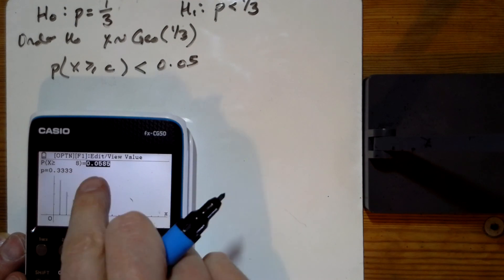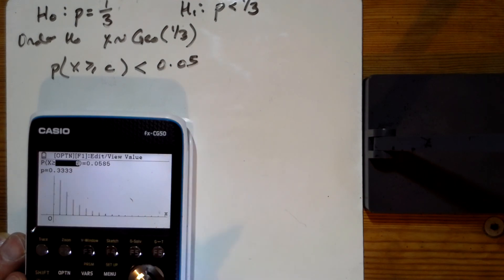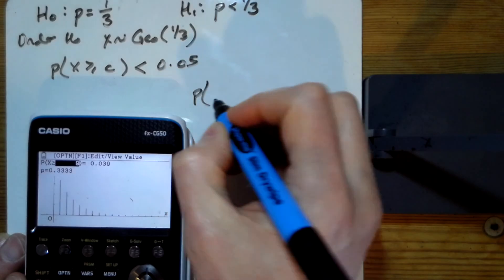And see, the value of eight is a little bit too big. So let's change to the value of nine. And now that's a little bit, just a little bit smaller.